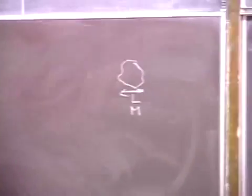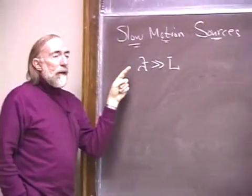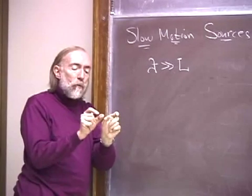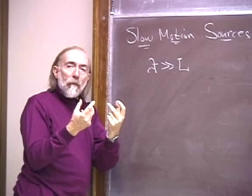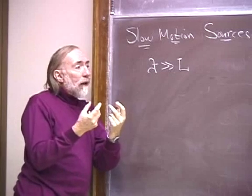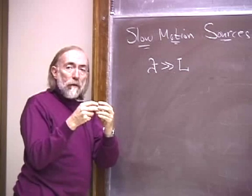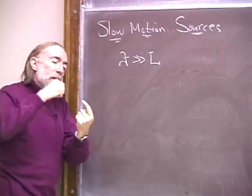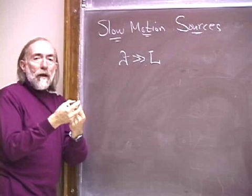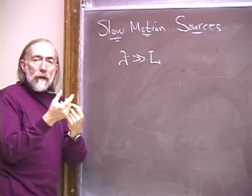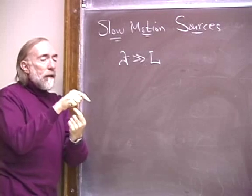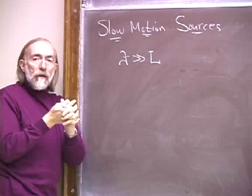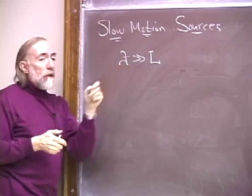But it is true for two black holes that are orbiting each other with a separation big compared to their size. They orbit slowly, and so the waves have a long wavelength, and so this slow-motion approximation is valid. That example illustrates the fact that slow-motion sources need not have weak internal gravity. Another example is a spinning neutron star deformed from axial symmetry — a mountain on its surface. As it spins, that mountain radiates gravitational waves, but neutron stars typically spin sufficiently slowly that the slow-motion approximation is valid.